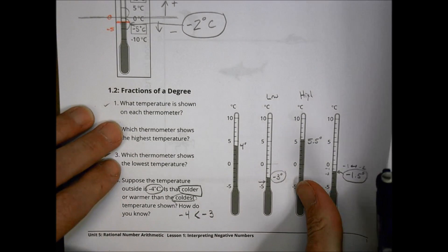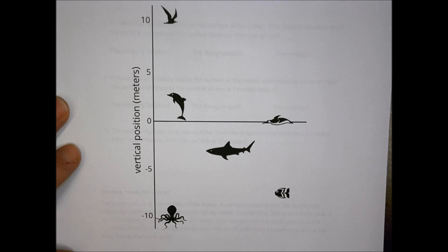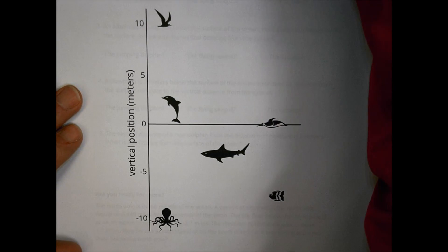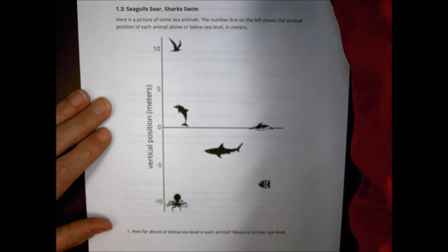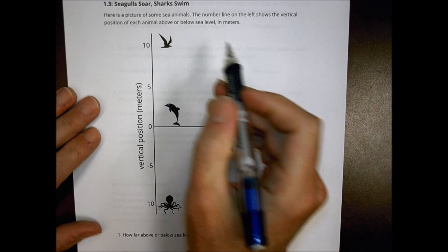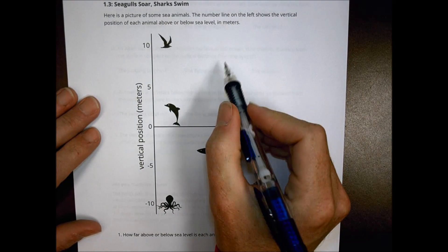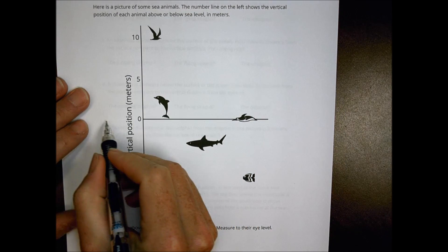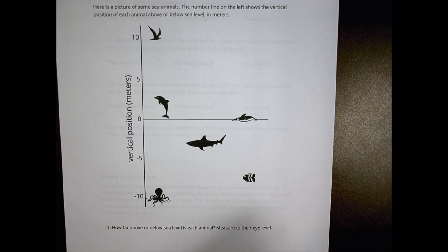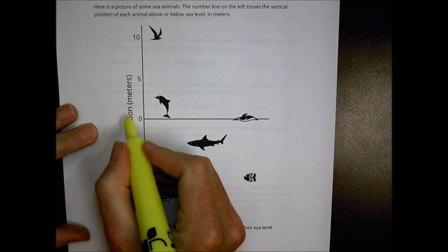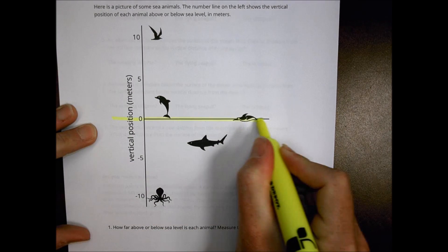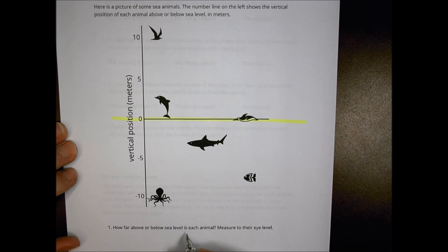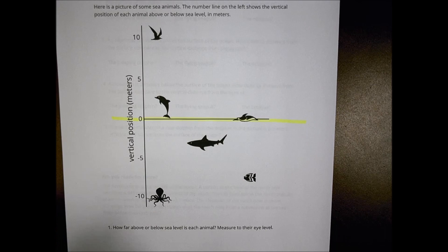Let's look at the next set. We have seagulls, sharks — here's a picture of some sea animals. The number line on the left shows the vertical position of each animal above or below sea level in meters. This is our zero point right here — sea level at zero. The question asks: how far above or below sea level is each animal, measured to their eye level?